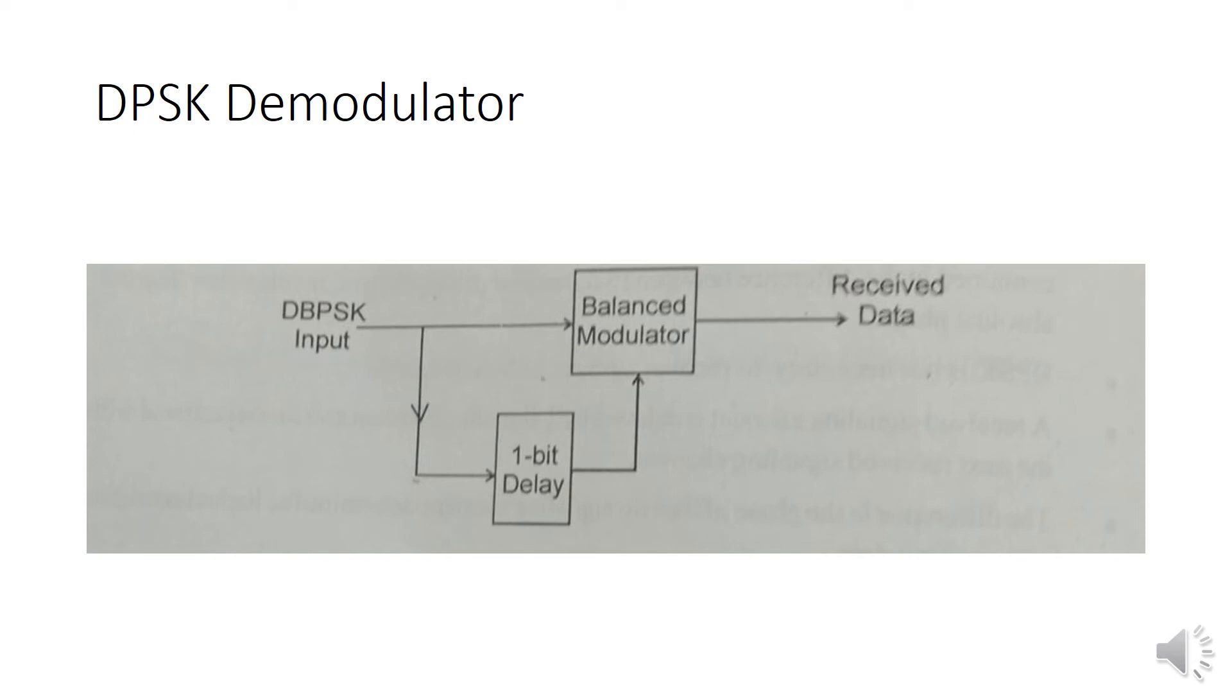In this block diagram, the timing sequence for the differential binary phase shift keying receiver, the received signal is delayed by 1 bit time, then compared with the next signaling element in the balanced modulator.